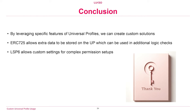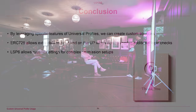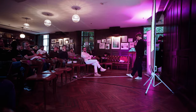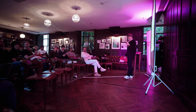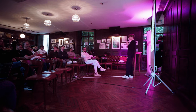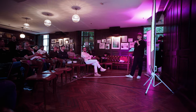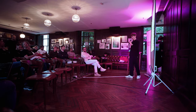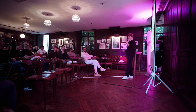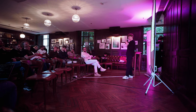The main two features we used were ERC-725 — the key data store — and LSP 6 — the controller permission setup — which gave us extra safety. We're in a good phase right now where we're really looking for developers to come and start building. The launch of Universal Profiles is really just the start — we have a long way to go improving Universal Profiles and building new applications.